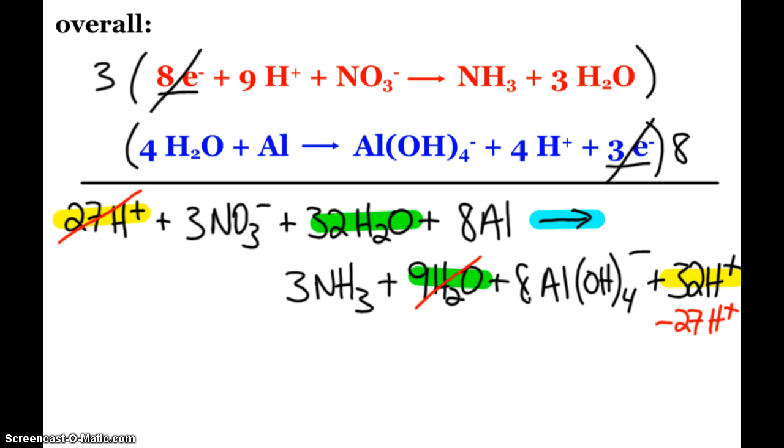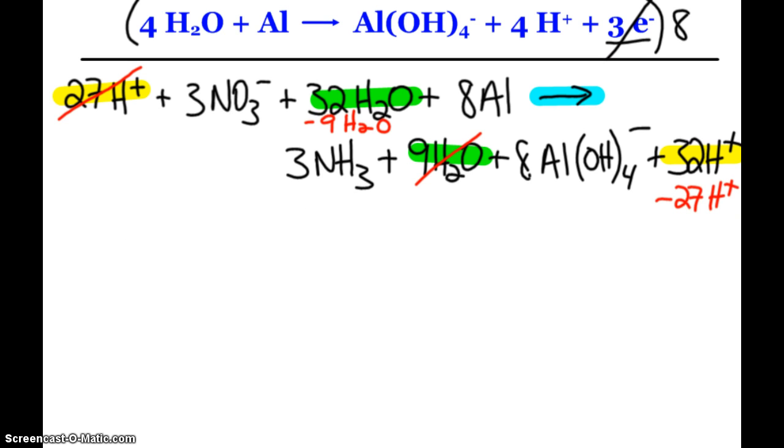So I can get rid of all 27 hydrogen ions here and subtract them from the product side. And I can get rid of all nine waters on my products by subtracting them from the reactants. So overall, right now, my reaction is simply 23 waters, 32 minus 9, plus my three nitrates, plus eight aluminums.